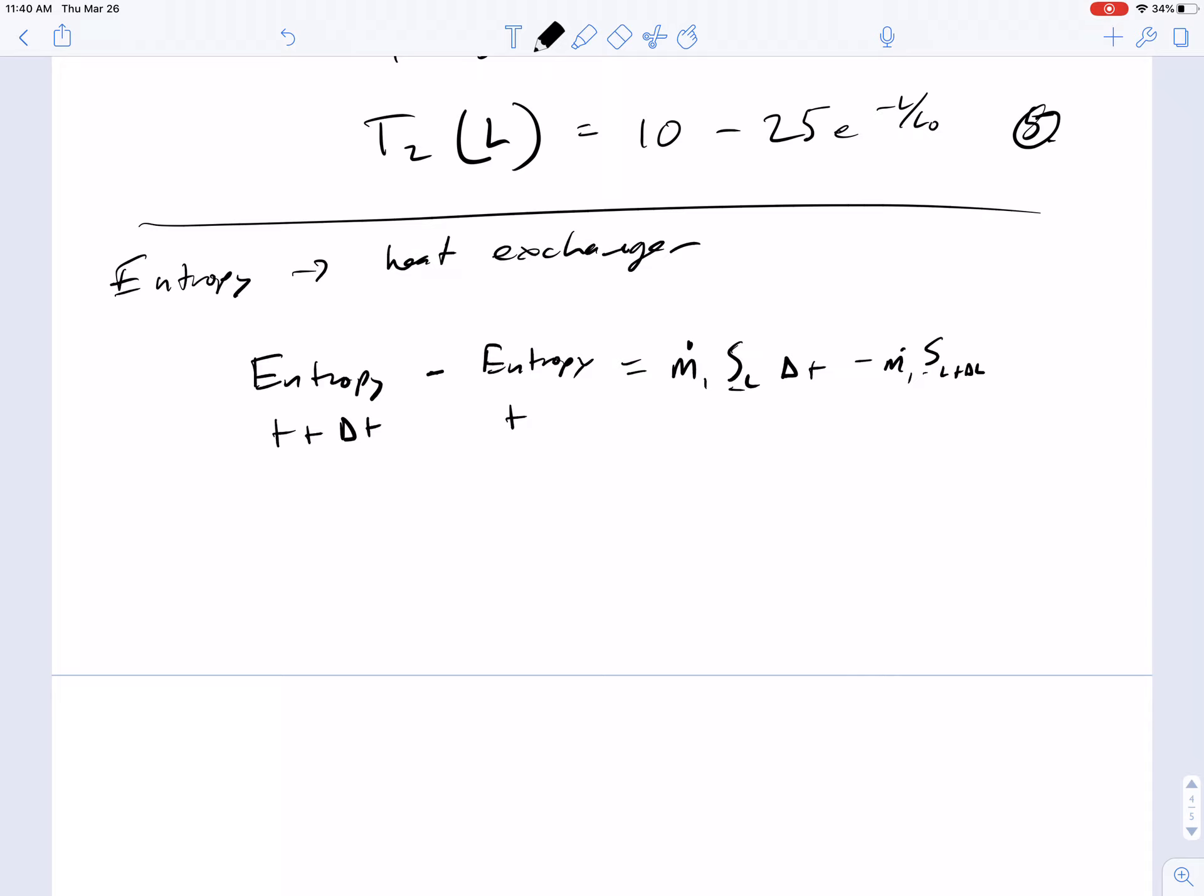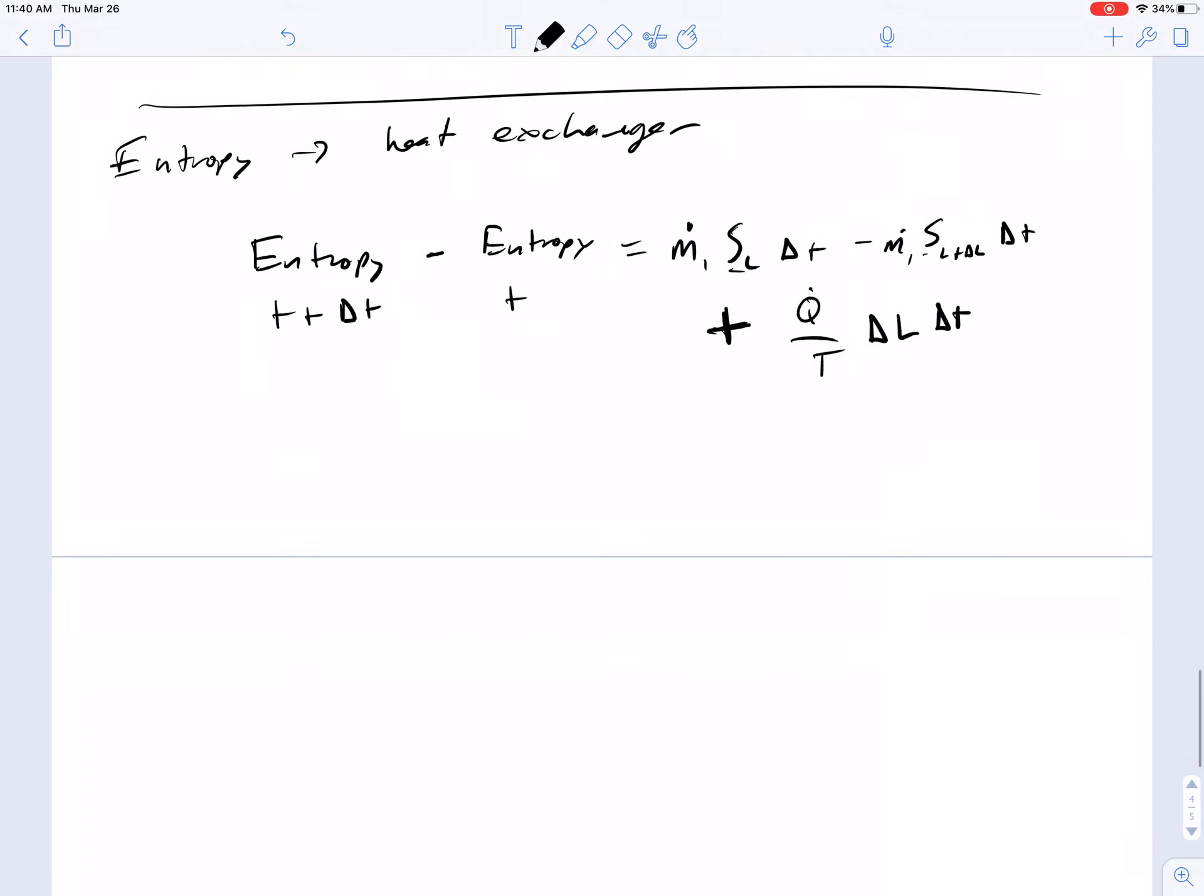Plus the entropy generation that is coming due to the heat transfer between the streams. We have this Q dot over the temperature term times the interval of time and the interval of length in which this is happening.